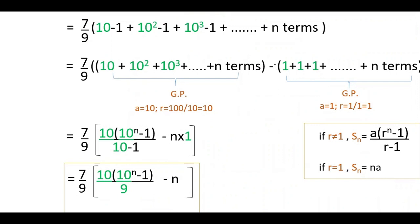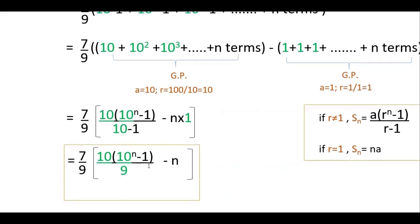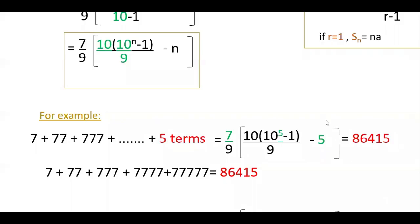For the second GP, R equals 1, so the sum is n into A, which is n into 1, equals n. So the final expression is 7 by 9 into [10 into (10 to the power n minus 1) divided by 9, minus n]. You can verify this by substituting n equal to 5: you will get 6450, and if you add 7 plus 77 plus 777 plus 7777 plus 77777 separately, you get the same result.